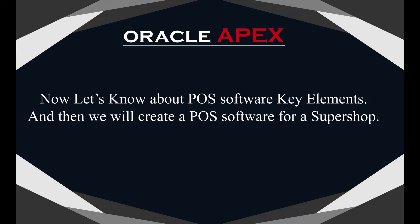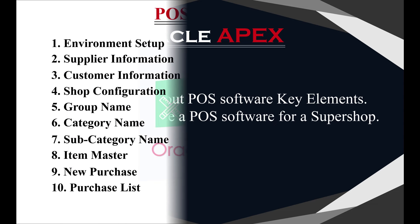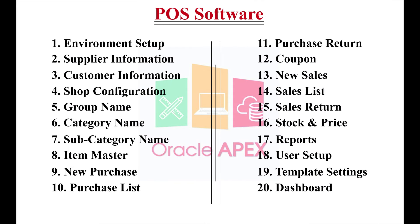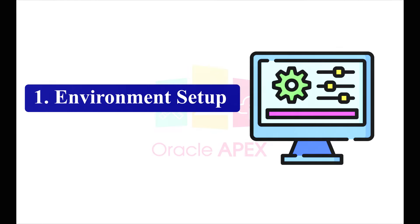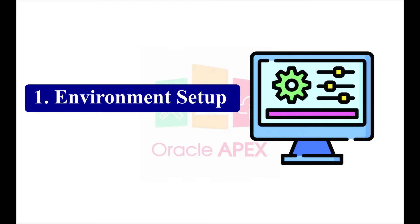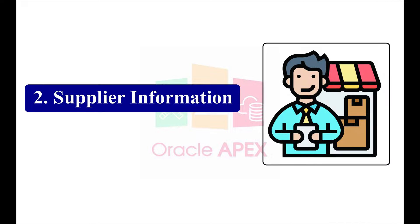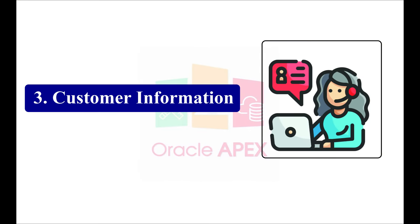Now let's learn about the POS software key elements, and then we will create a POS software for a super shop. Number one is environment setup — you have to set up an environment for your workspace to create this app. Number two is supplier information — this is the data of your supplier.